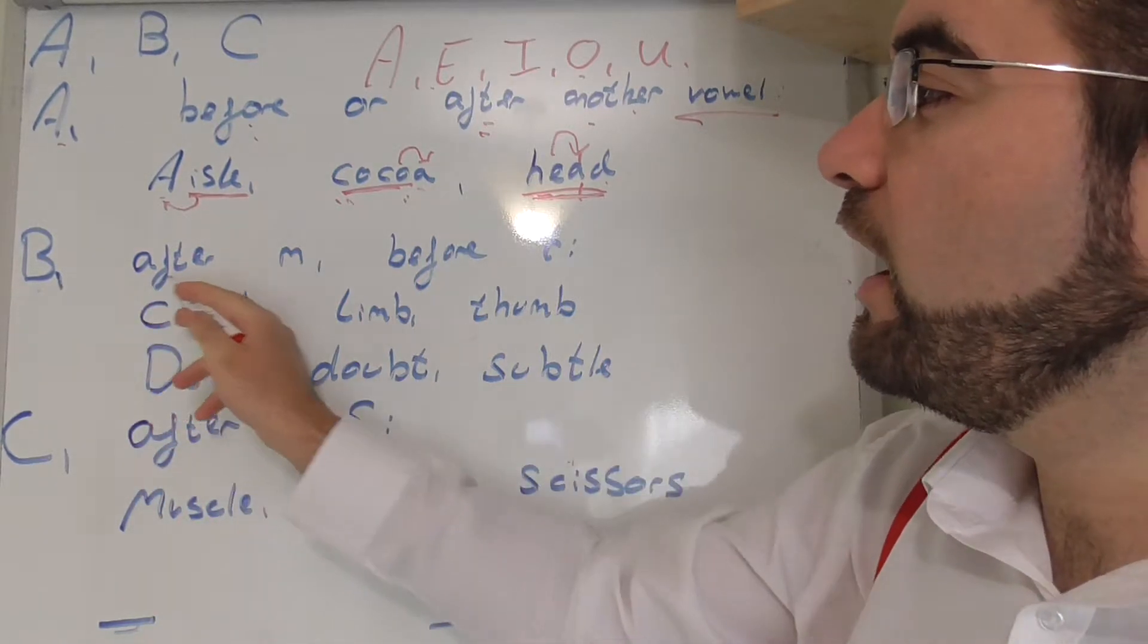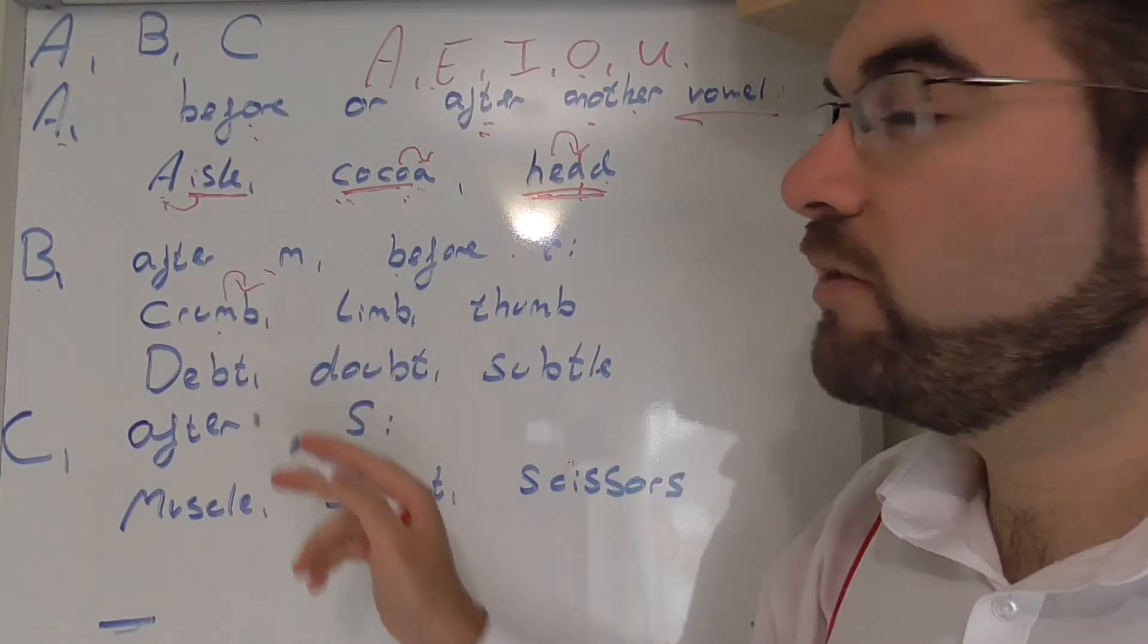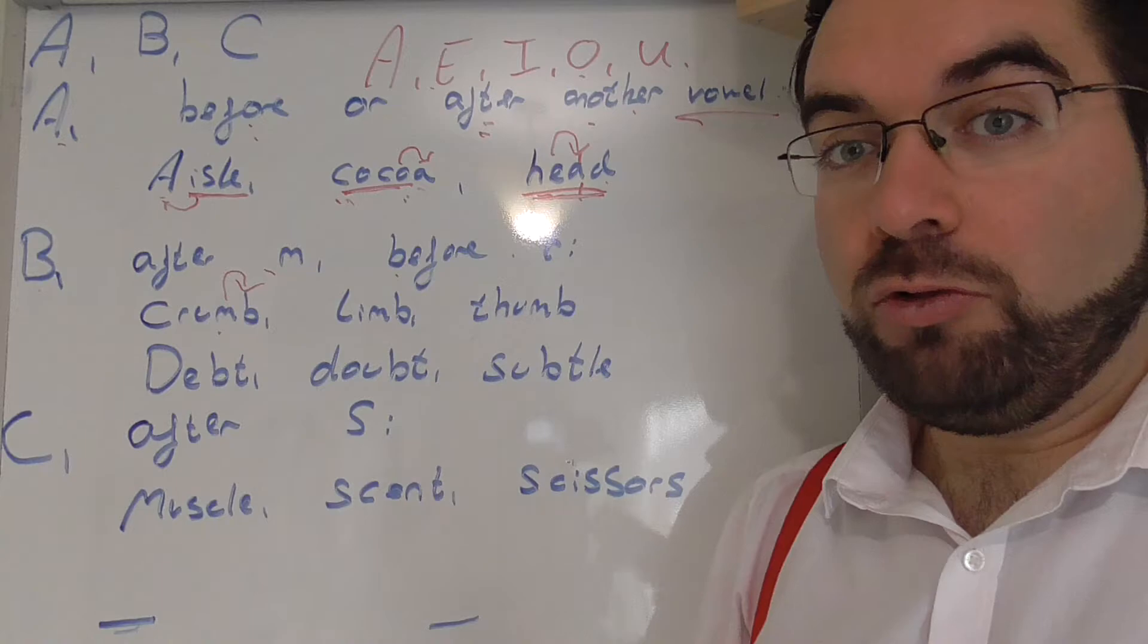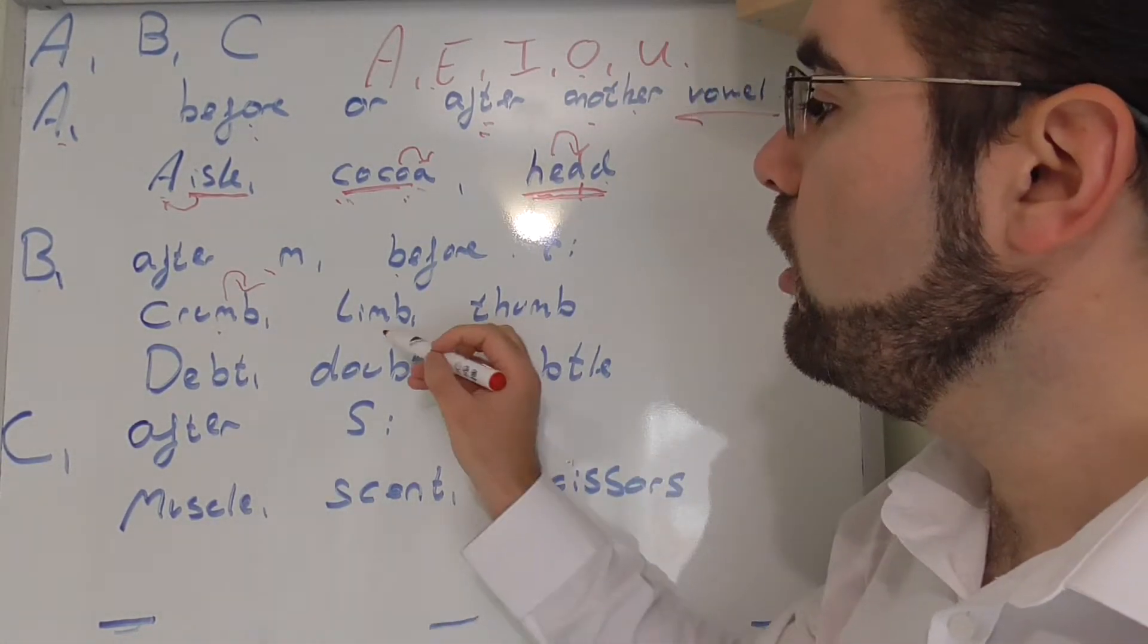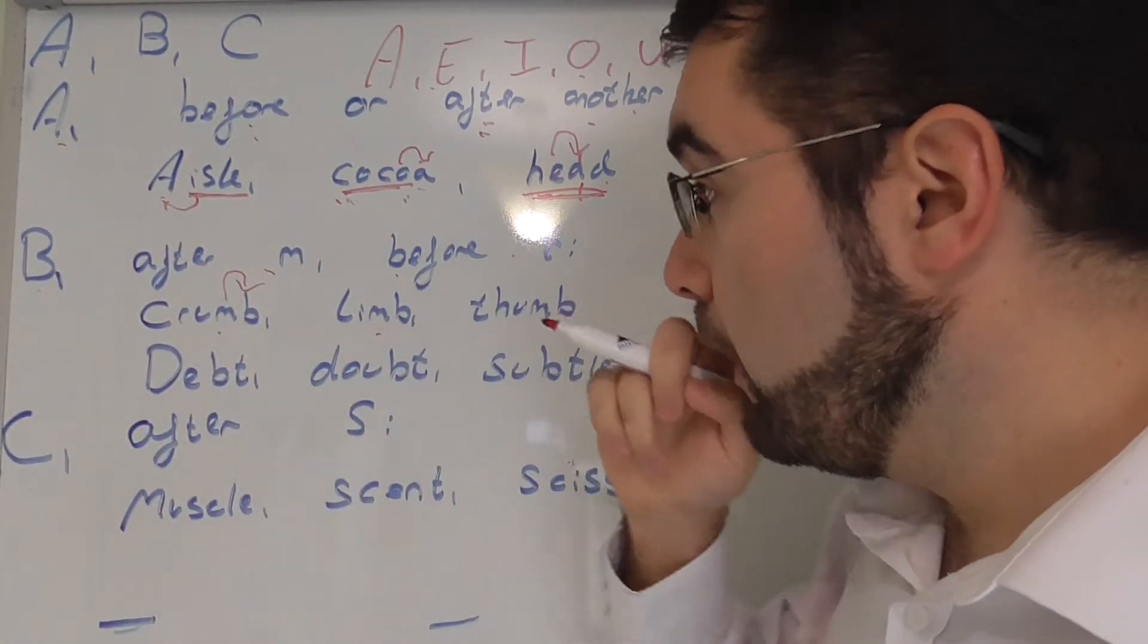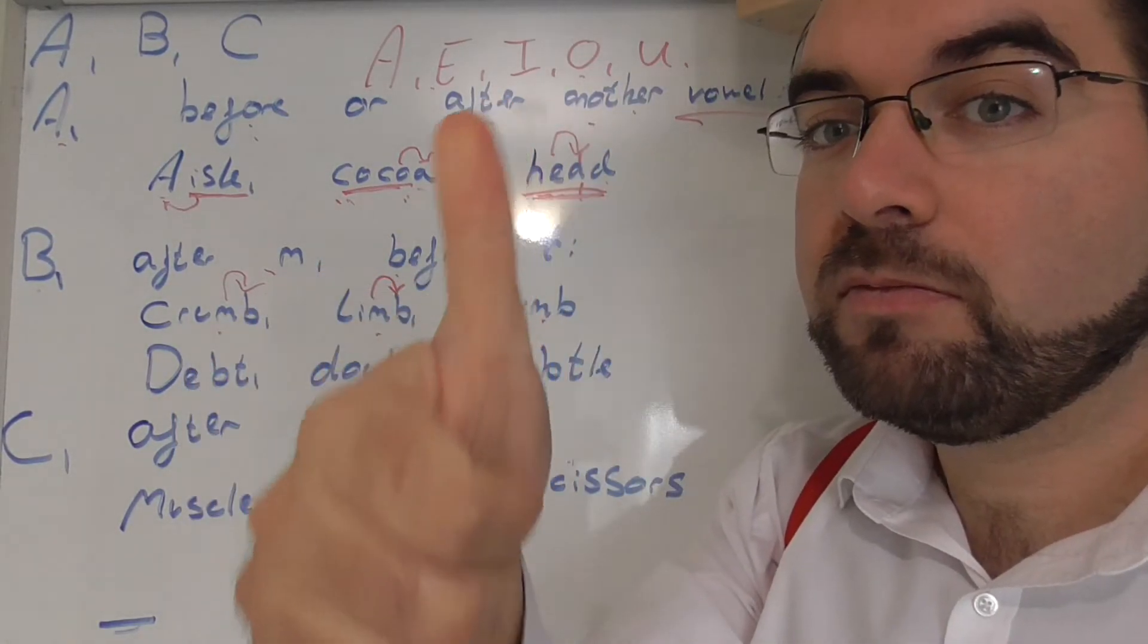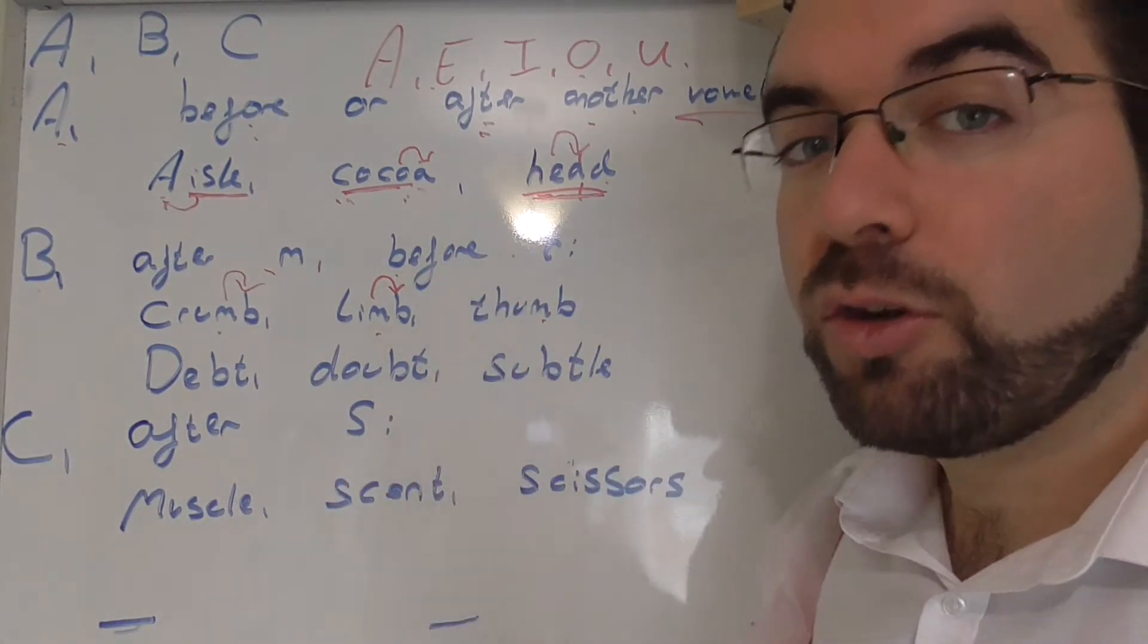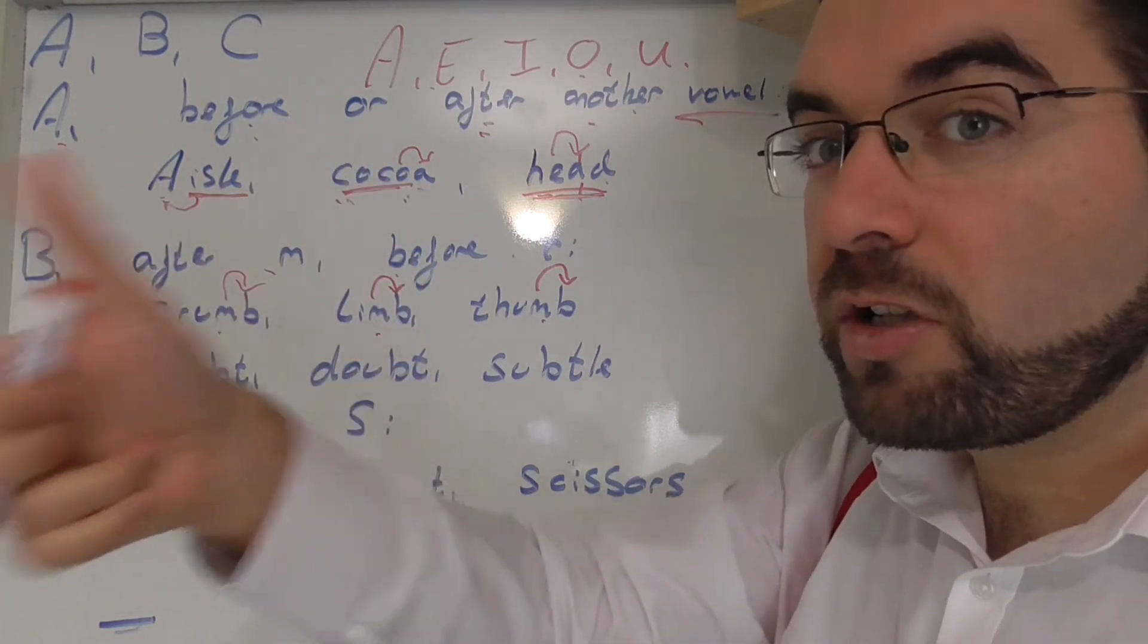B, after M, or before T. So, crumb. After M. Crumb. You're getting small crumbs on you. Or limb. Limb. Like an arm or a leg. After the M. Or thumb. Thumb. After the M.